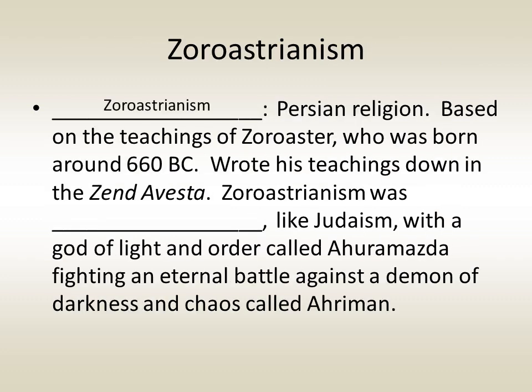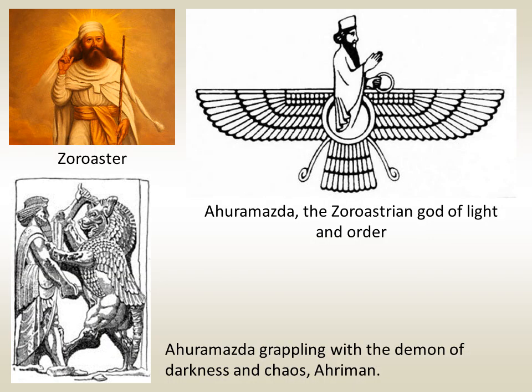The Persians practiced a religion called Zoroastrianism, based on the teachings of a man named Zoroaster, or Zarathustra, born around 660 BC. Zoroaster wrote his teachings down in a book called the Zend-Avesta. Like Judaism, Zoroastrianism was a monotheistic religion, with a god of light and order called Ahura Mazda fighting an eternal battle against a demon of darkness and chaos called Ahriman.